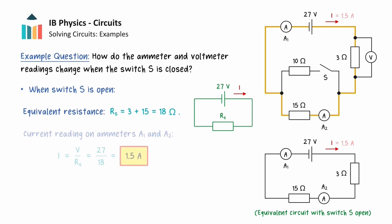We can then calculate a current of 1.5 amps around the circuit from this equation, and this will be the reading on both ammeters.